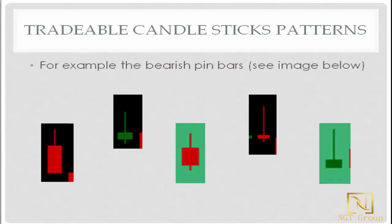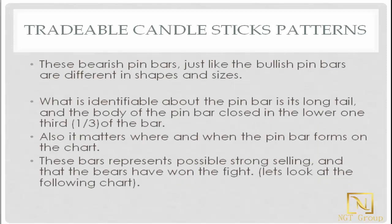This is an example of the bearish pin bars. These bearish pin bars, just like the bullish pin bars, are different in shapes and sizes. What is identifiable about the pin bar is its long tail, and the body of the pin bar closed in the lower one-third of the bar. Also, it matters where and when the pin bar forms on the chart. These bars represent strong selling, and that the bears have won the fight.